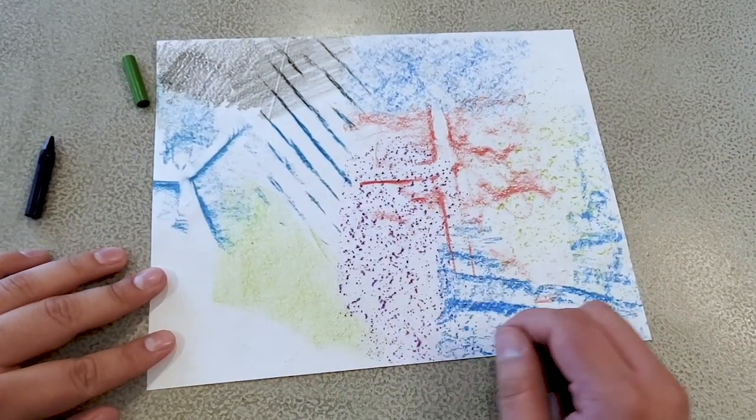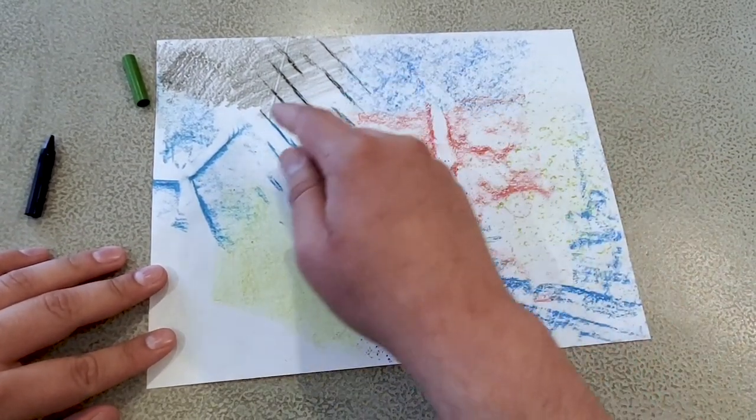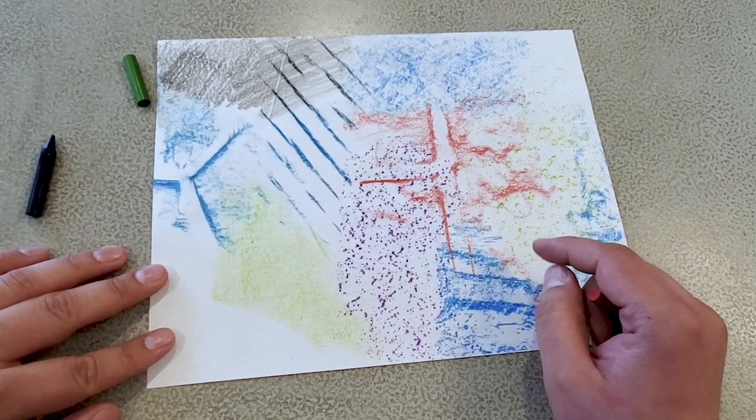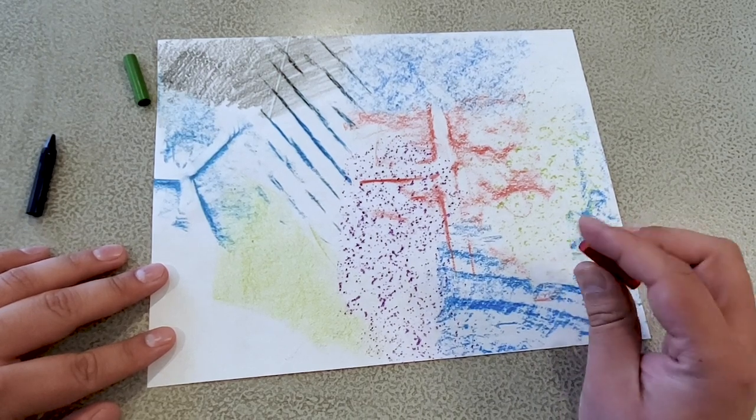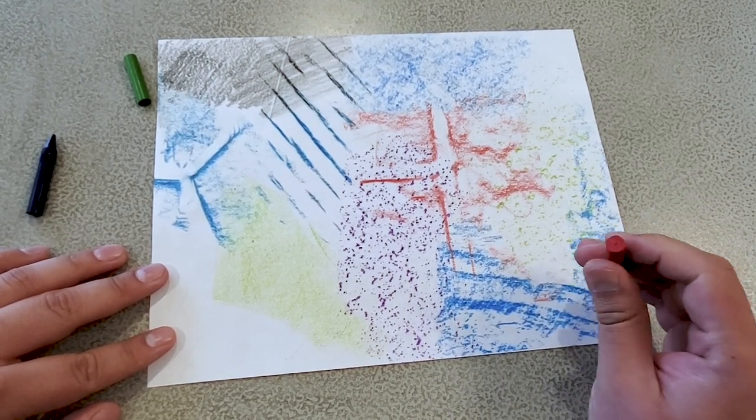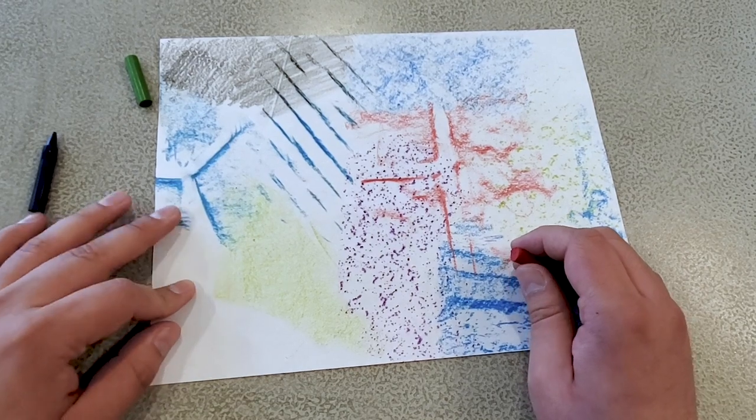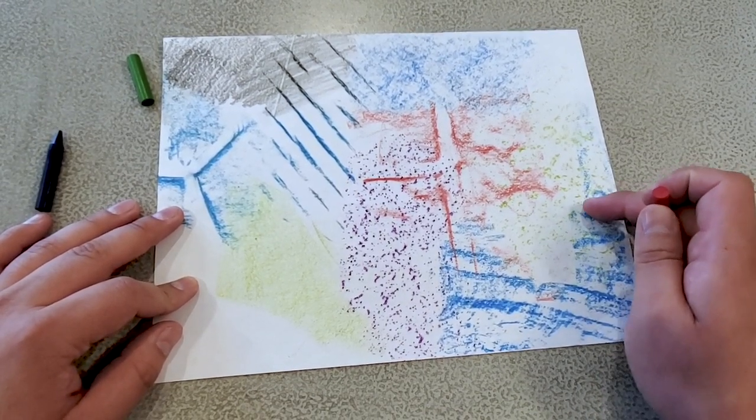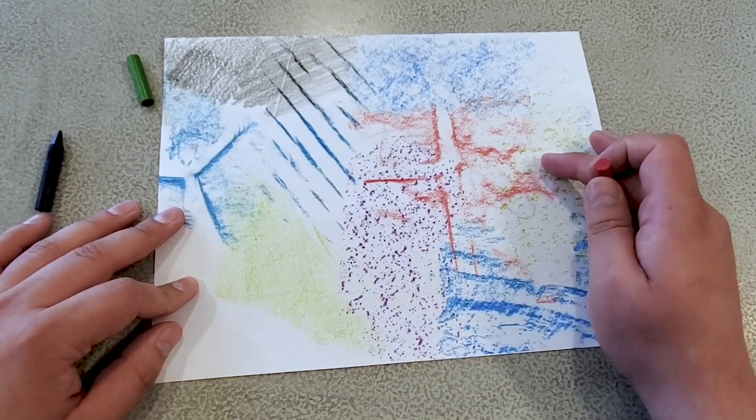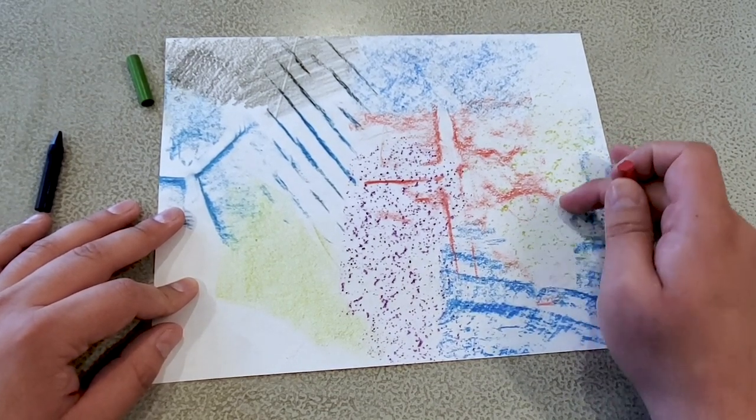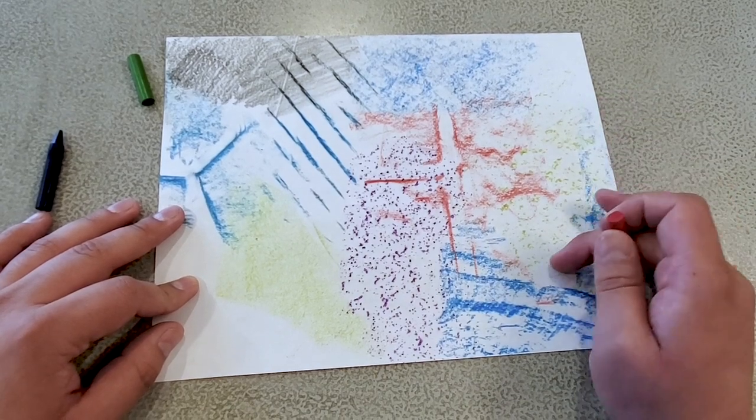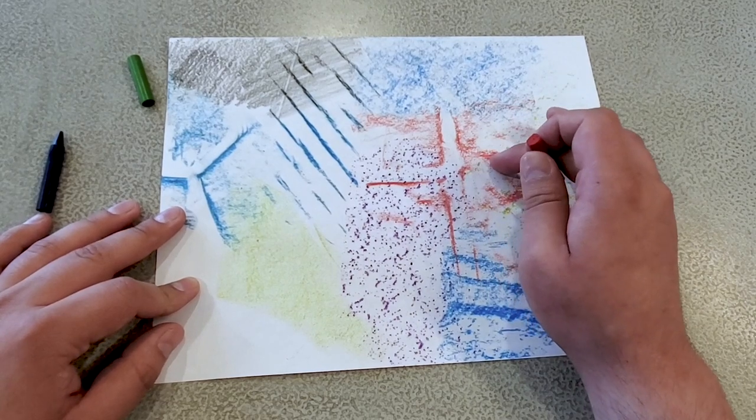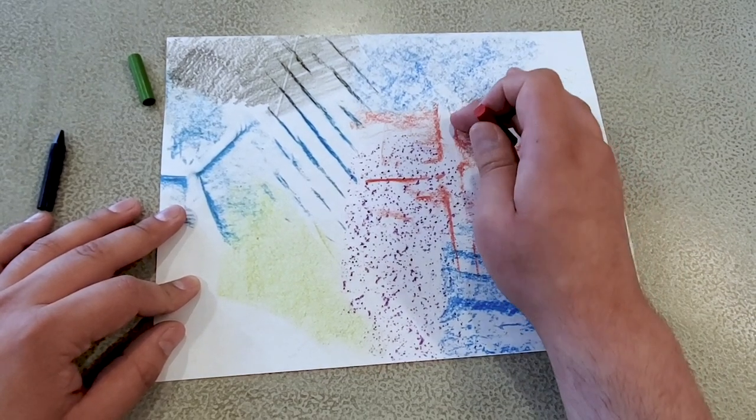So this is what my texture rubbings look like when I go around my room and find different textures. You can see that I changed the crayon for each different texture and you can see that I also overlapped them. So even though I have this blue texture right here, I overlap the green, this is the texture from my wall on top of it. And then I overlap the red, this is the texture from the fireplace tile that I have right here.